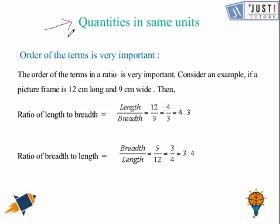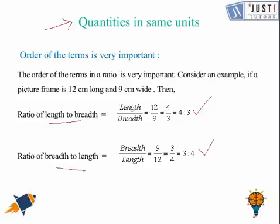The next question asks for the ratio of breadth to length. Now breadth comes first, so breadth is on top and length is on the bottom: 9 over 12, which simplifies to 3 over 4, giving a ratio of 3 to 4. As you can see, when the order of the ratio changes, the answer also changes. So while answering questions, make sure to check two things: what unit you are working in, and what order the terms are given.